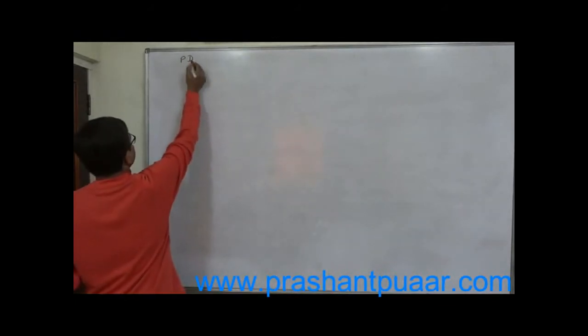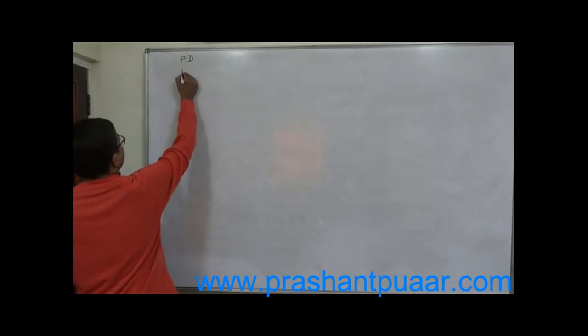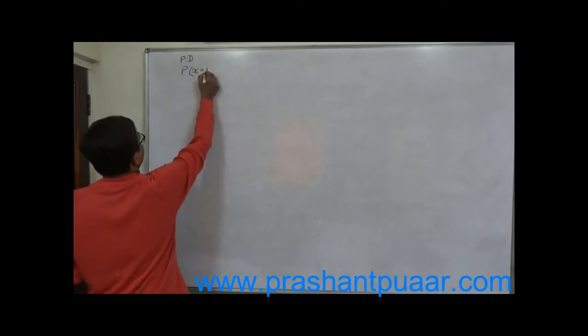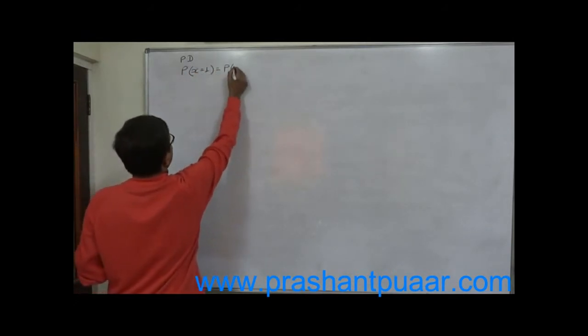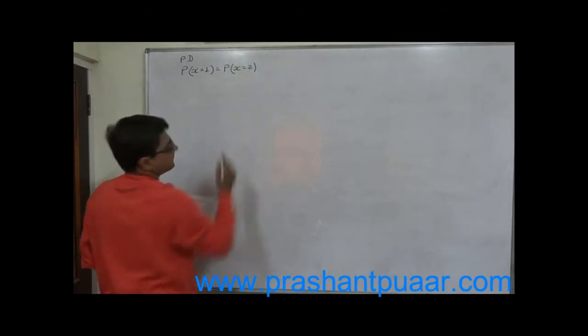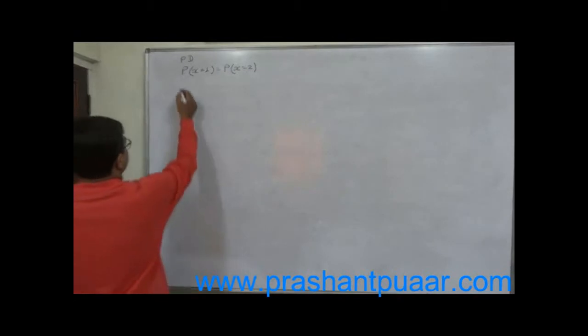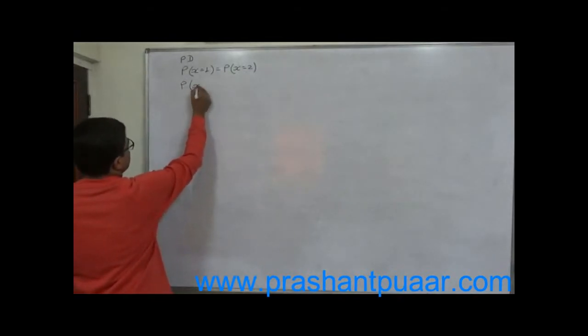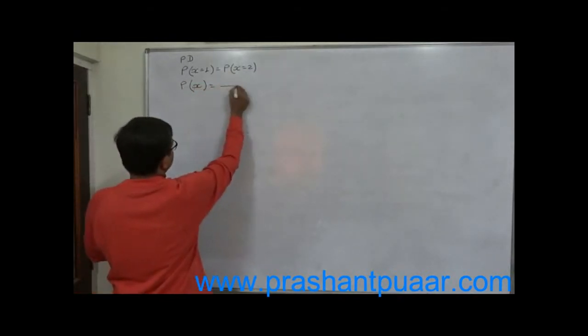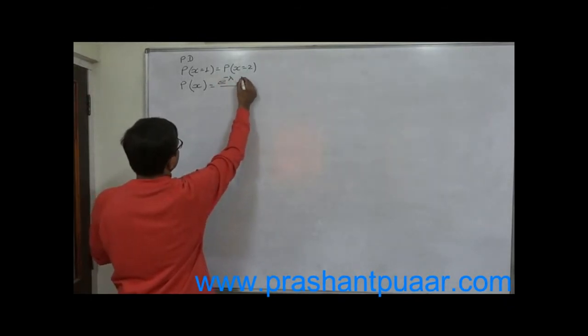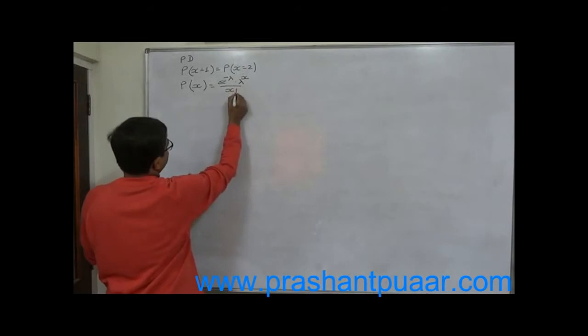It is given that x follows Poisson distribution and probability of 1 equals to probability of 2. Now we know that probability of x or r success is equals to e raise to minus mean into mean raise to r divided by r factorial.